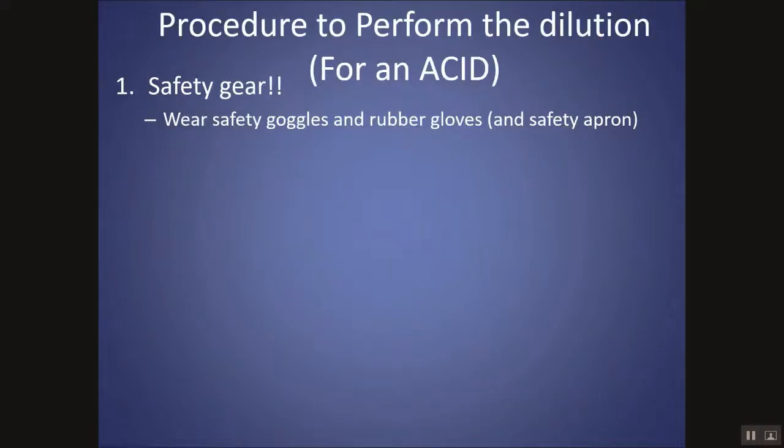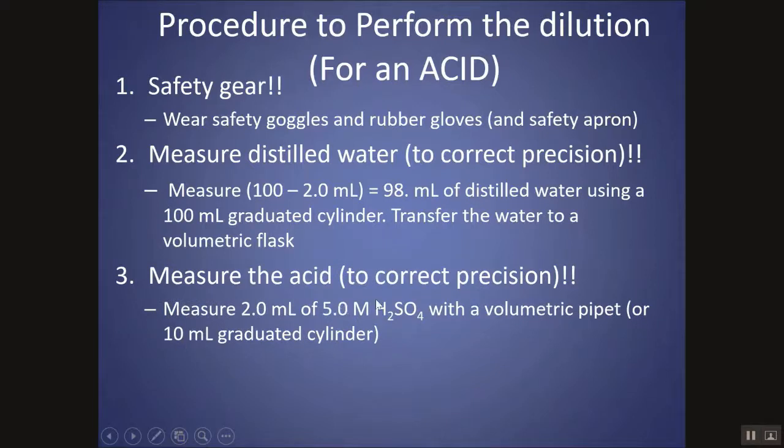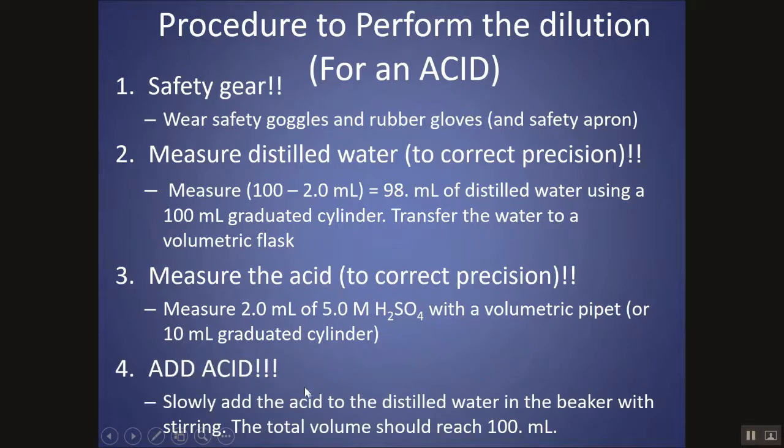So my procedure would be always wear safety gear, especially if you're handling an acid. Measure out the distilled water, probably using a graduated cylinder. Okay, measure out 98 milliliters of distilled water and transfer that to your volumetric flask that you're preparing your solution in. And then measure out the acid since it's a lesser amount of the acid. Maybe use a volumetric pipette. Anything that has volumetric in front is really going to have a large number of sig figs.